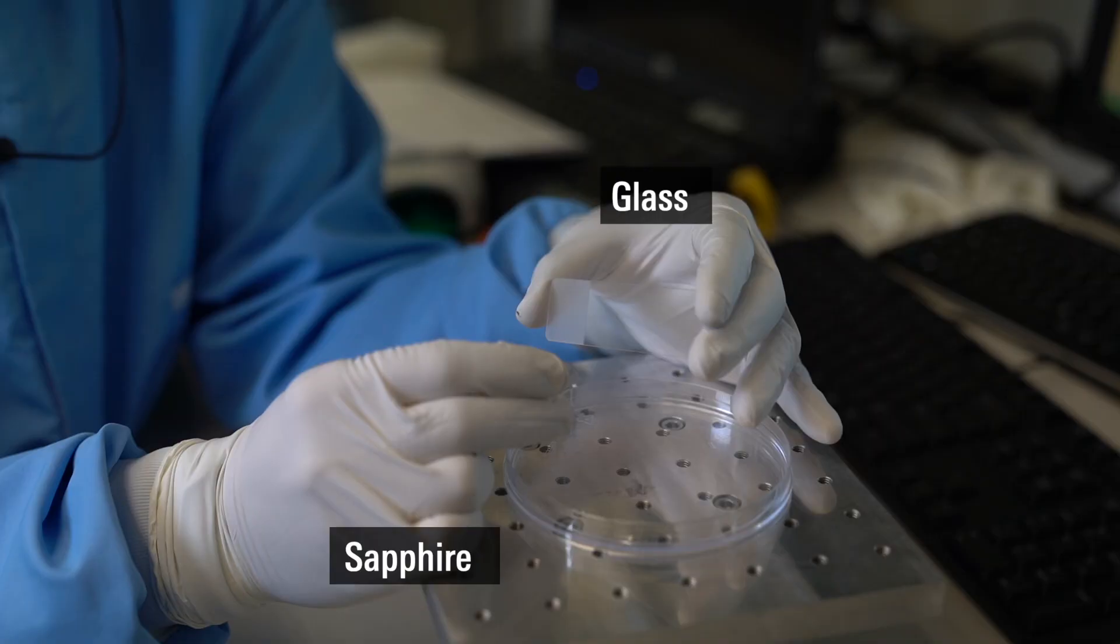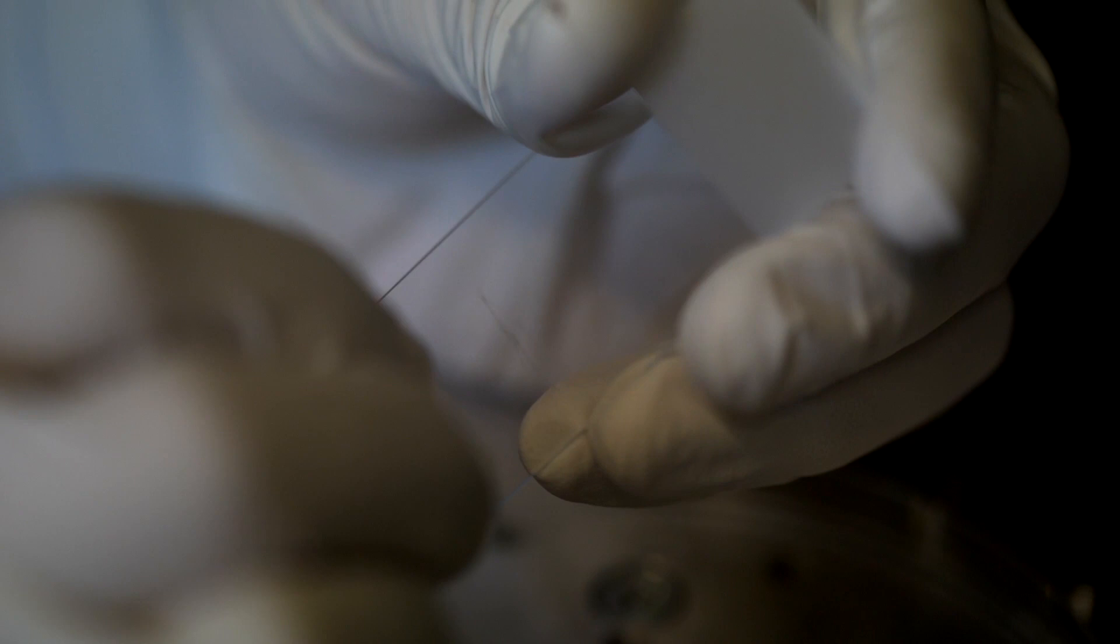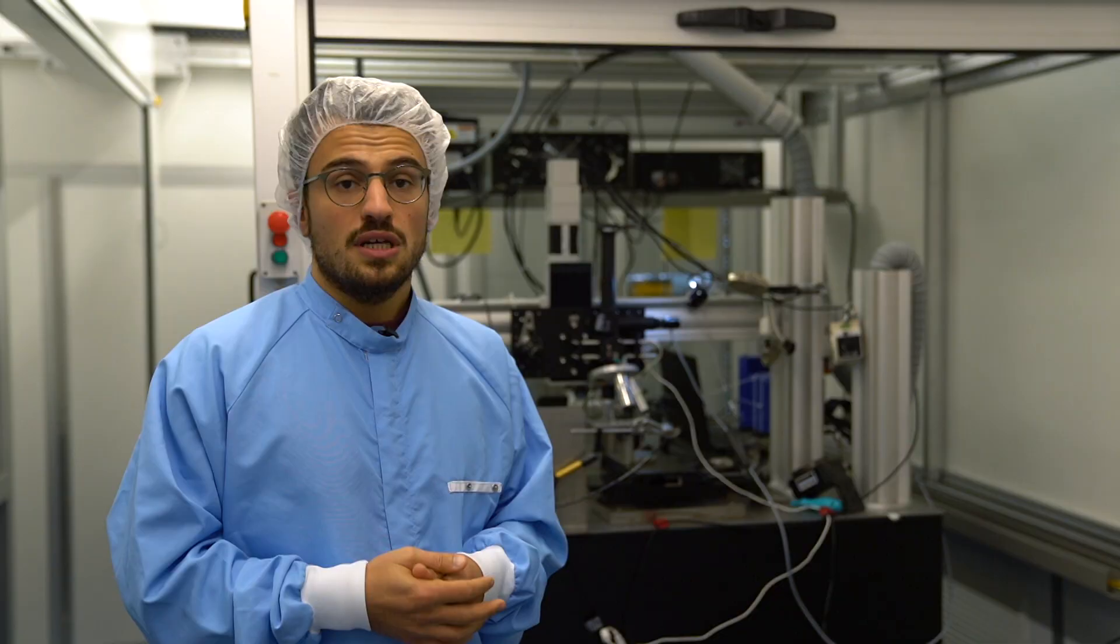Let's look at what happens when I try to scratch a little piece of glass with a piece of sapphire. We see that the glass is easily scratched by the sapphire. That happens because sapphire is much harder than glass. That makes it a very interesting material, but also pretty tricky to process.